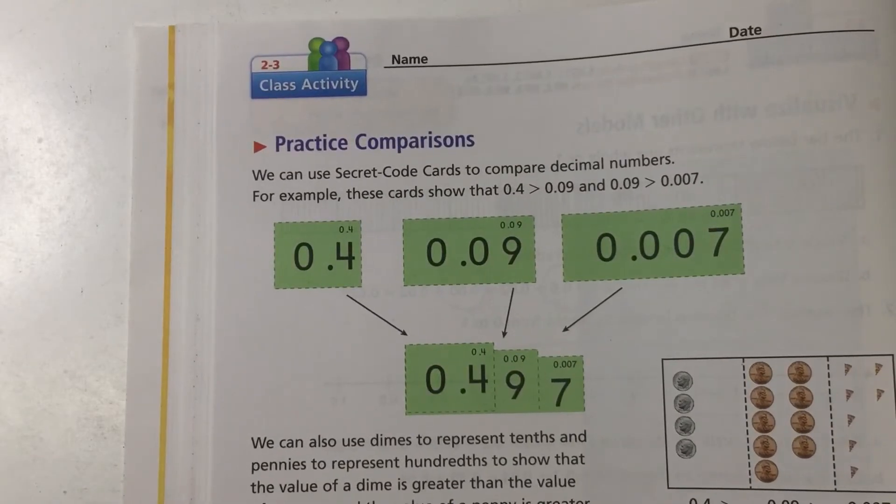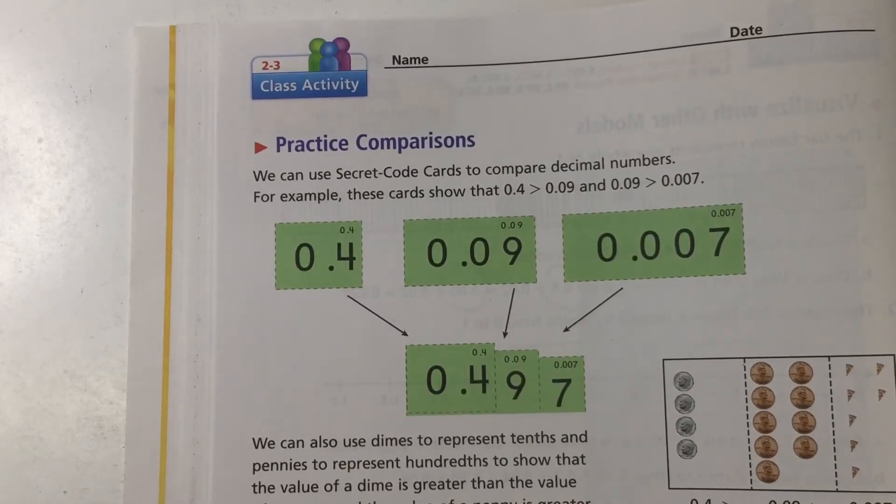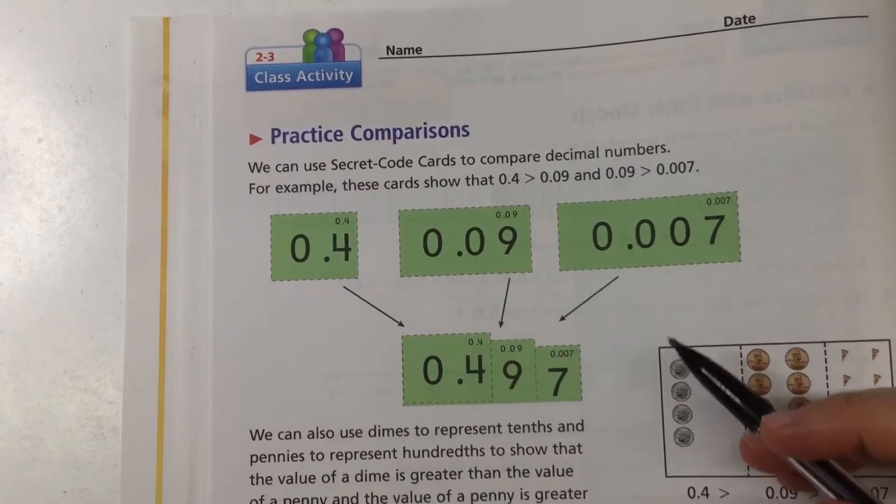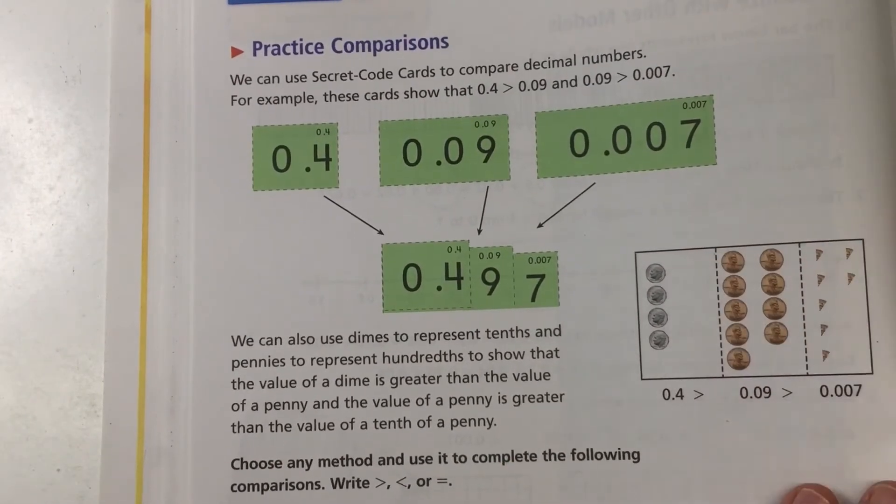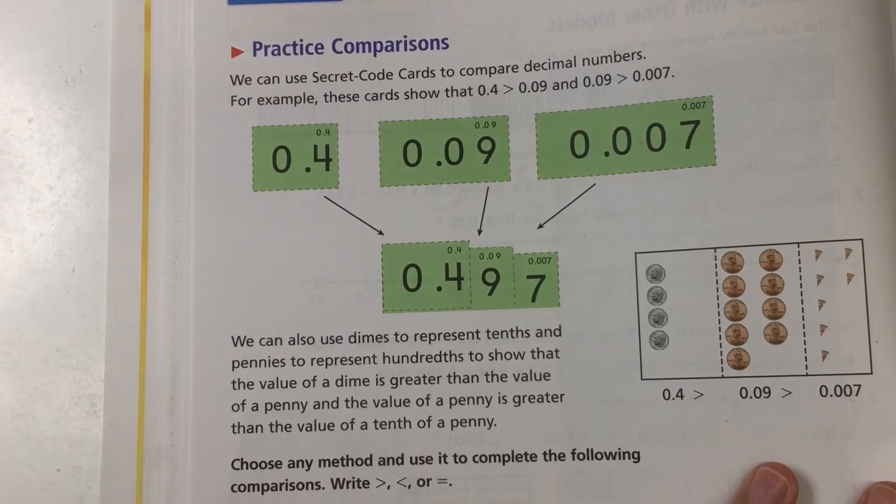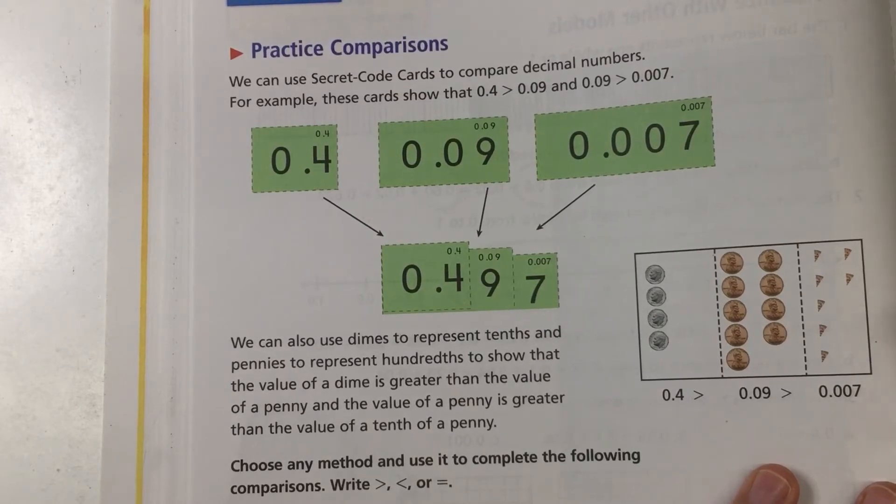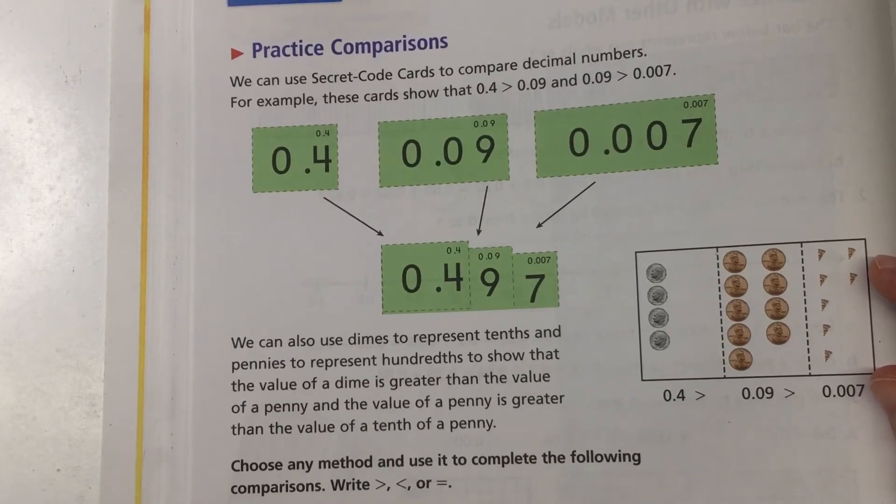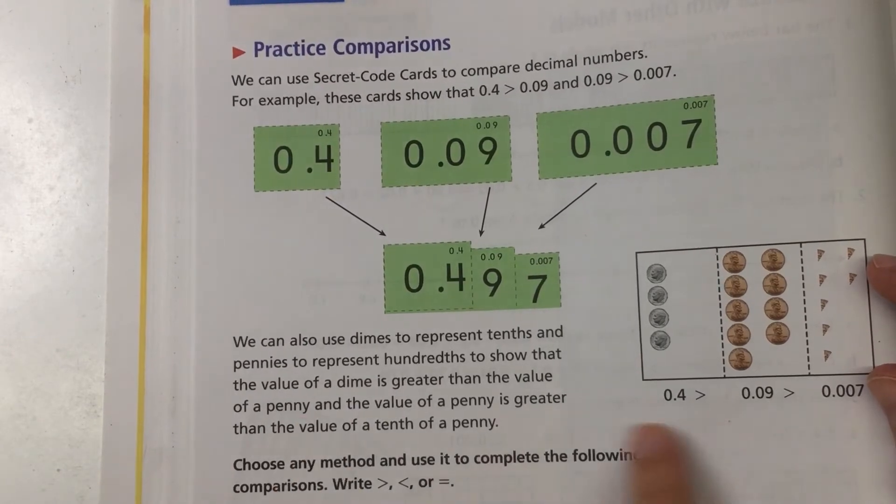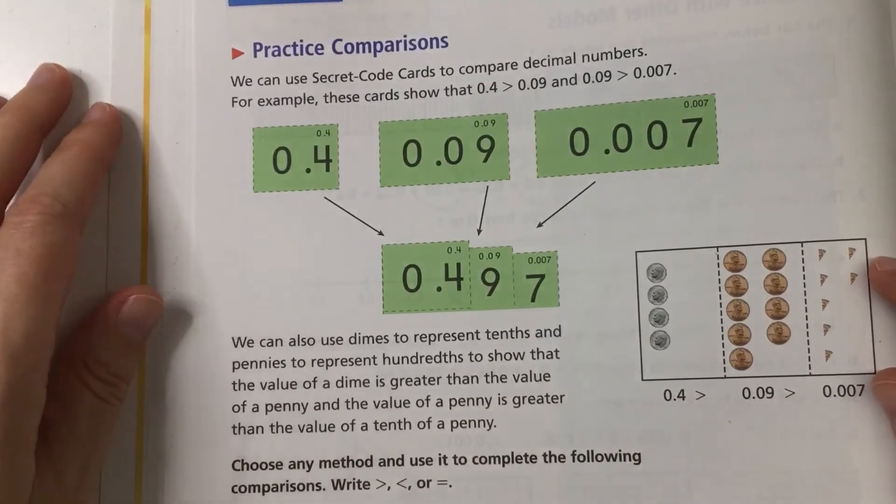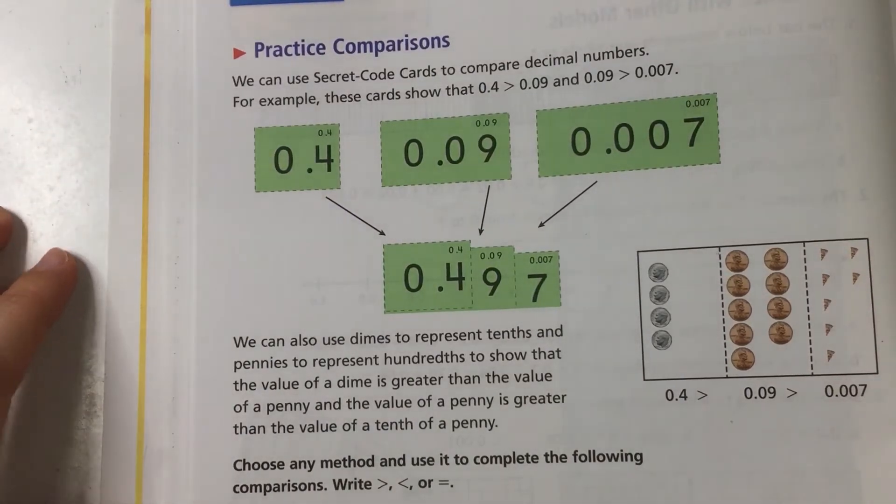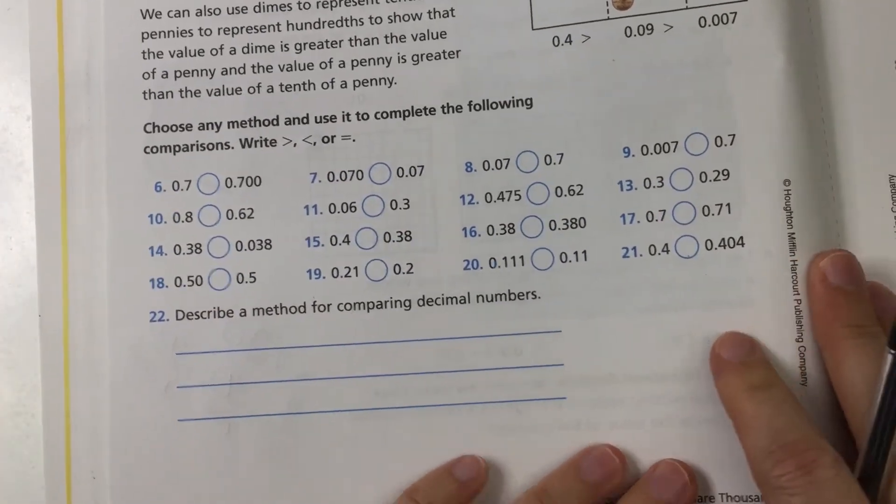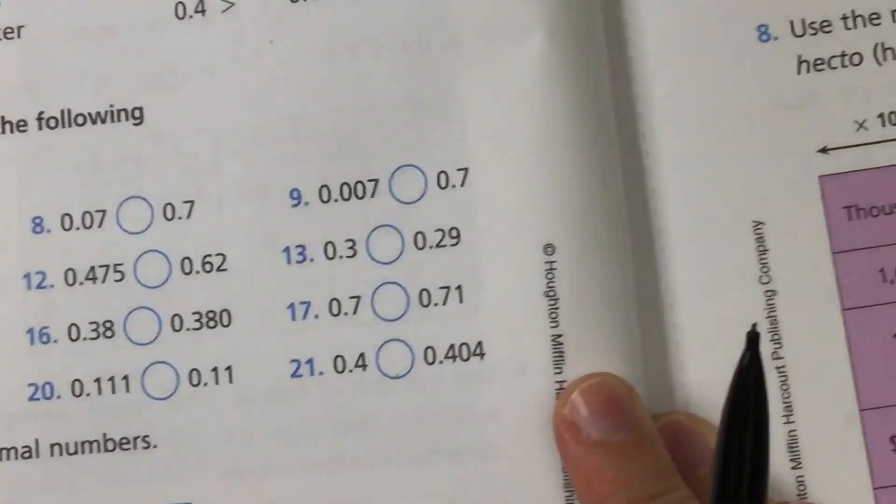Okay, so now we're gonna do some practicing of comparisons. We can use secret code cards to compare decimal numbers and you can use them. You can stack them up on top of each other. It's a really nice way of comparing numbers. Or we can just line them up and make sure that we have them all lined up in the correct place value. They're also showing you how you can use money, which you're welcome to do as well. I'm gonna show you the way that I do it that keeps it pretty simple. And in my opinion, it's a pretty good way to do it. So let's check this out.